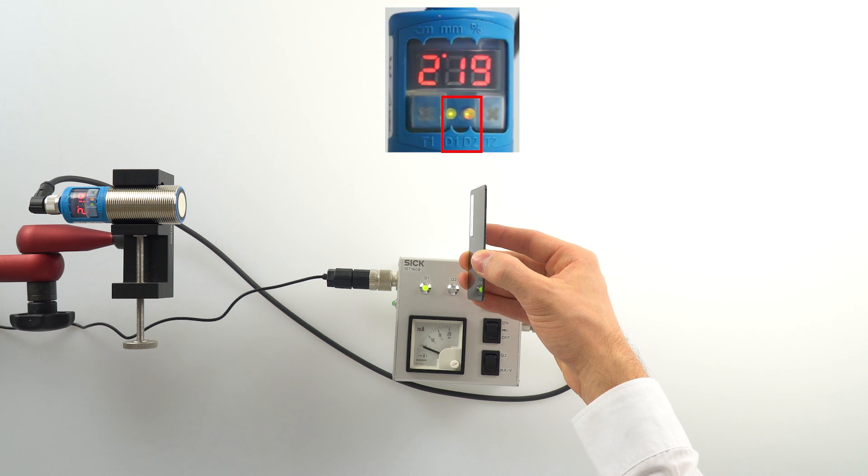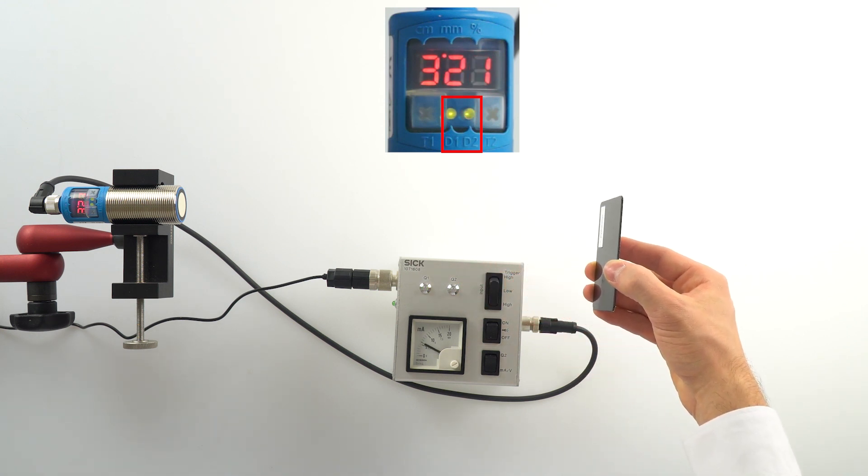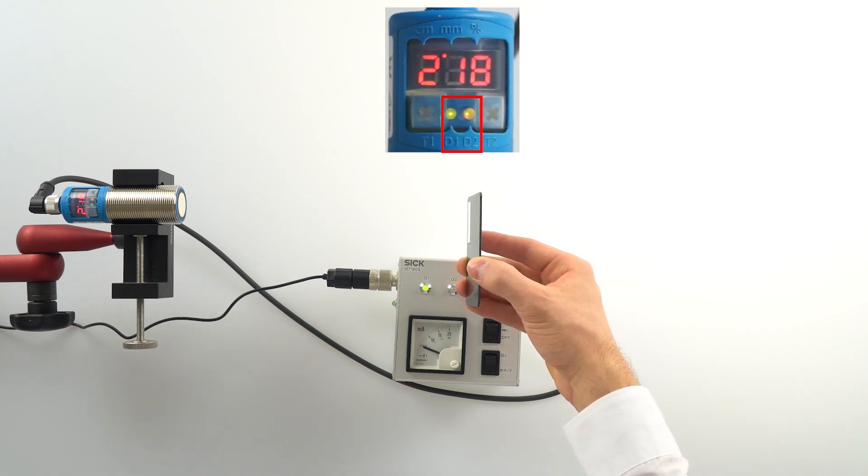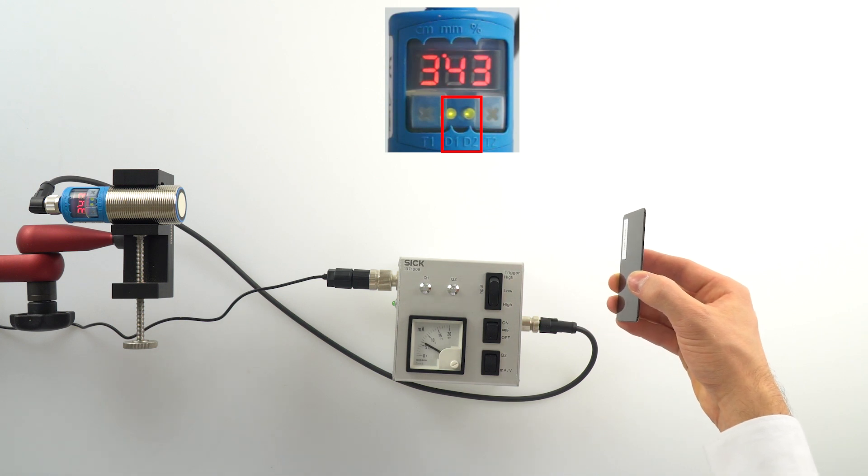The parameterization of the switching point is not only possible via teach-in, it can also be parameterized manually. Before we show you how to do the parameterization manually, please reset the UM30-2.